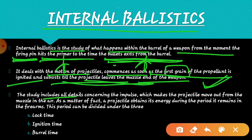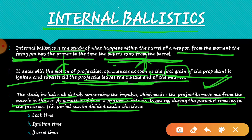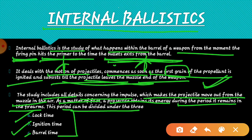This study includes all details concerning the impulse which makes the projectile move out from the muzzle in the air. As a matter of fact, a projectile obtains its energy during the period it remains in the firearm. This period can be divided into three parts. जब आपका internal ballistics रहता है इसमें काफी energy release होती है, तो यह जो पूरा period रहता है उसको basically हम तीन में divide करते हैं: first आता है lock time, second होता है ignition time, and third होता है barrel time.